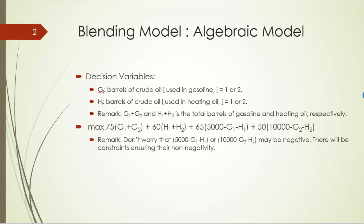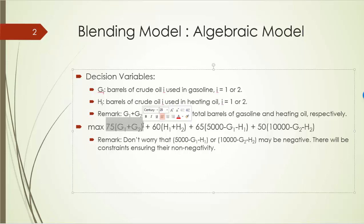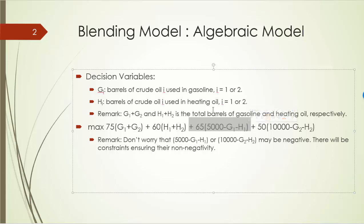The first term, 75 times the sum of G1 and G2, is the revenue from gasoline. The term with 65 represents revenue from selling leftover Crude Oil 1, and 50 times (10,000 minus G2 minus H2) is the revenue from selling leftover Crude Oil 2.